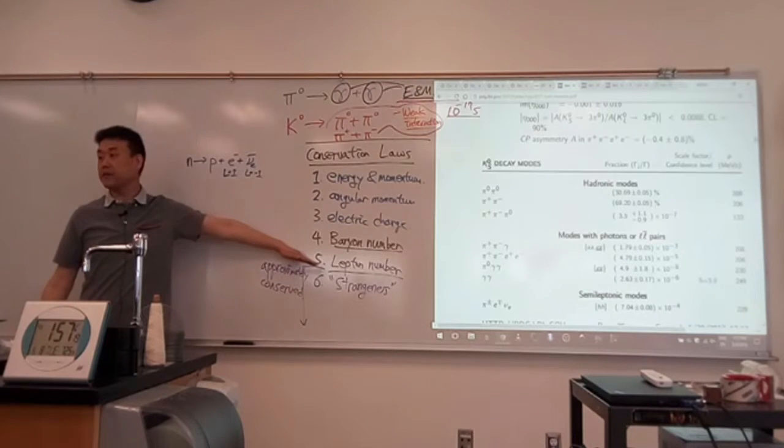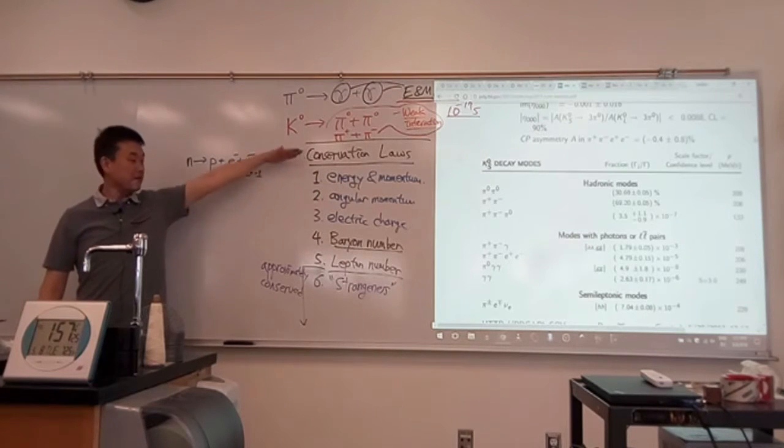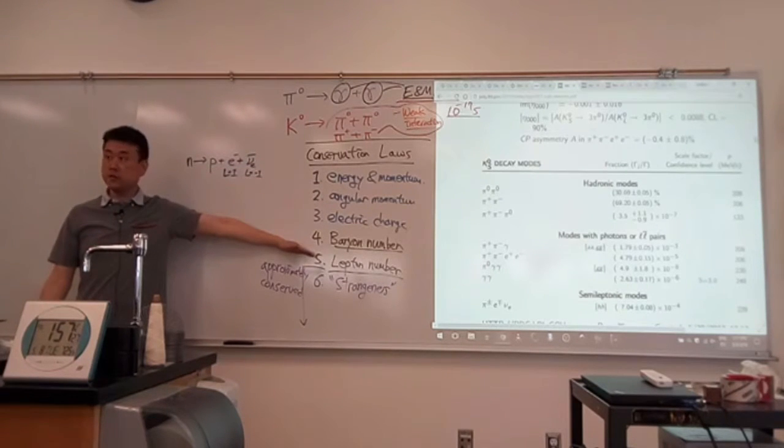Within the standard model of particle physics, these first five or six quantities, depending on how you count this one, they are absolutely conserved. There's never any exception to those. If you ever find an exception, you win Nobel Prize.